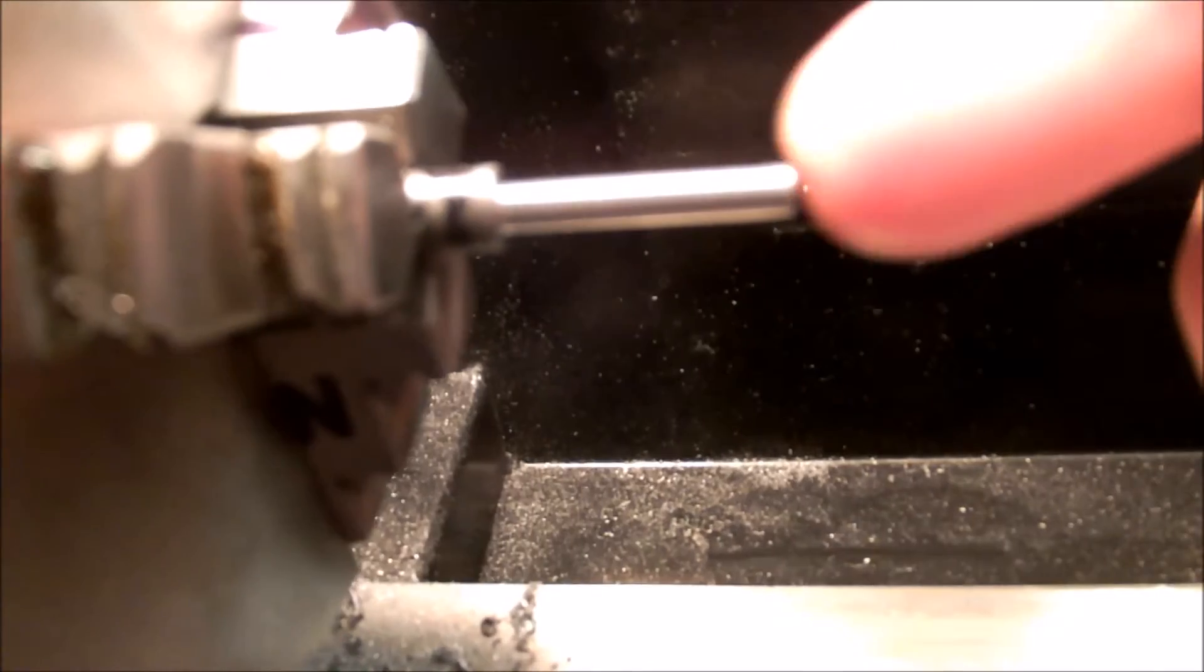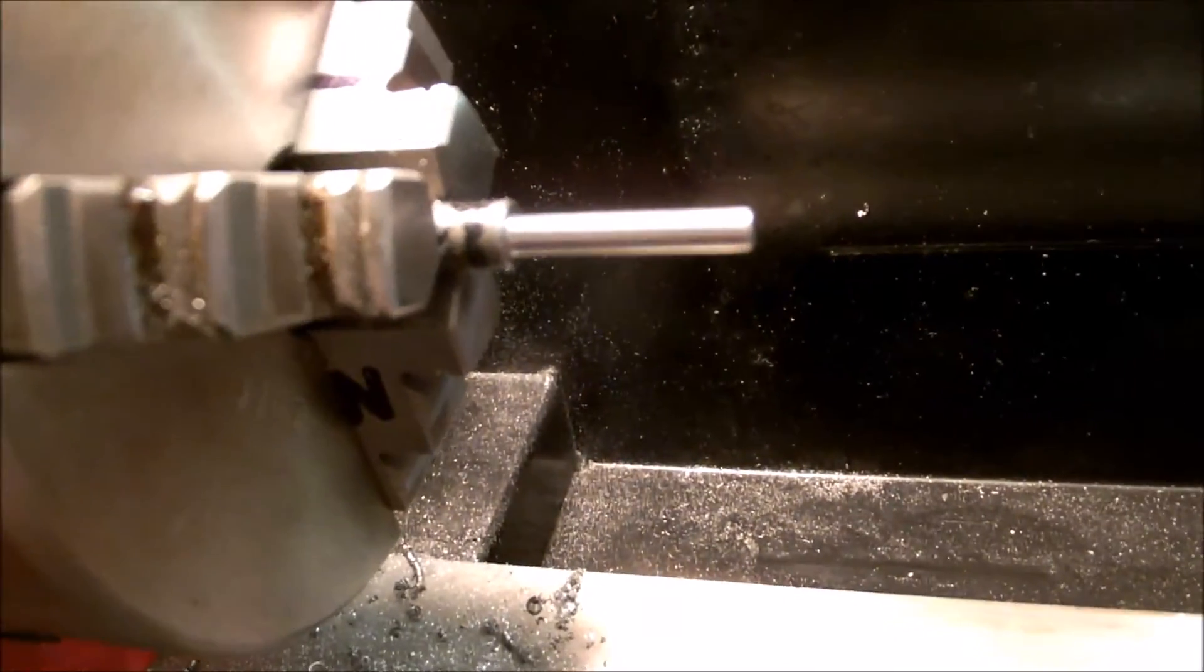Now we're going to put a thread out here, a half inch worth of thread. Then we'll measure it off to its overall length. I don't remember what that is offhand, I have to look at my plans. Then we'll chop it off. We should have ourselves a crank pin. We'll see what happens anyway.